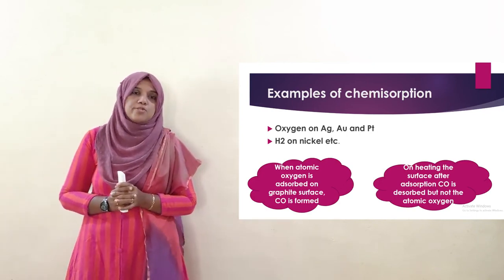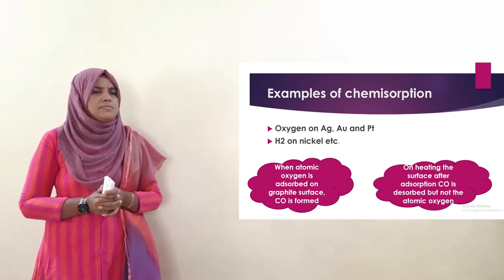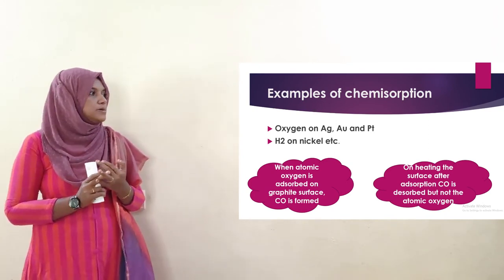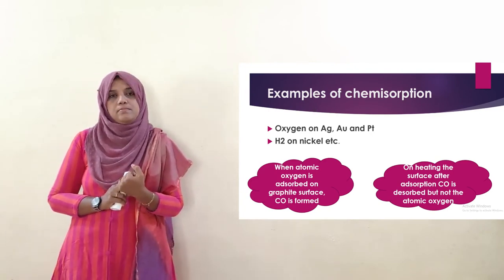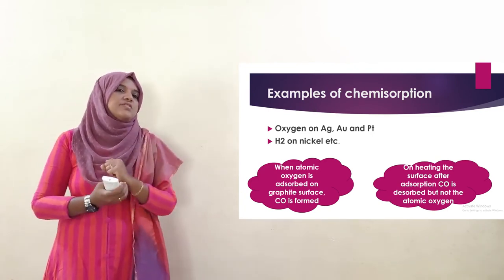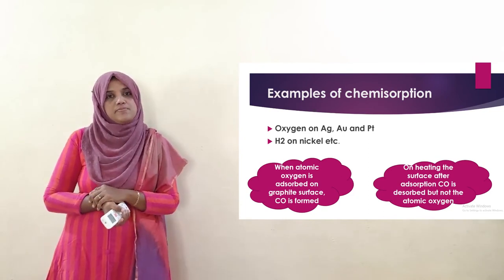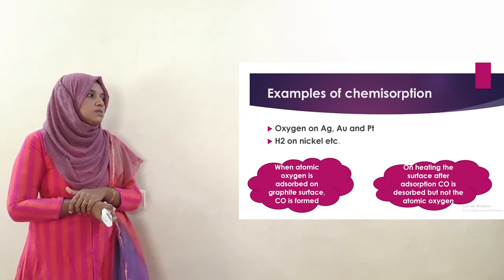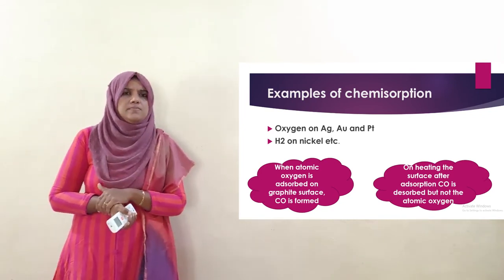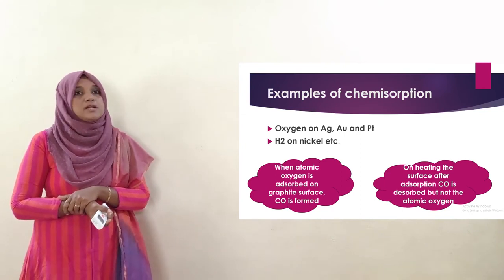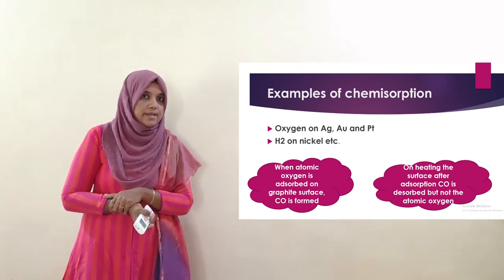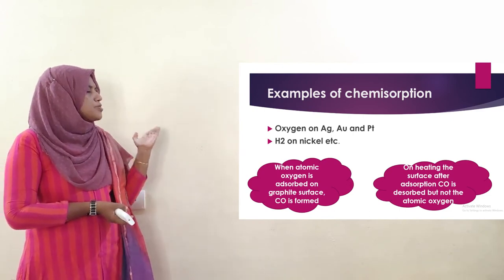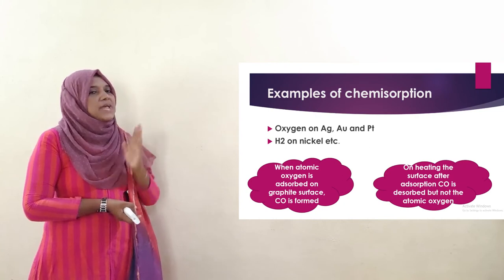Examples of chemisorption include: oxygen adsorbed on noble metals such as silver, gold, and platinum forming oxides. Another example is hydrogenation on nickel. Also, when atomic oxygen is adsorbed on graphite surfaces, carbon monoxide is formed.